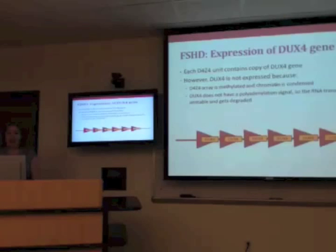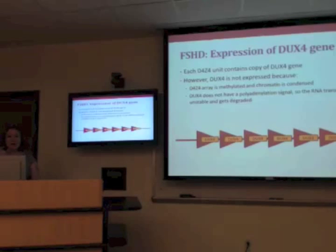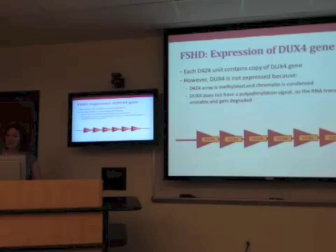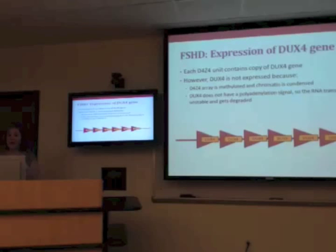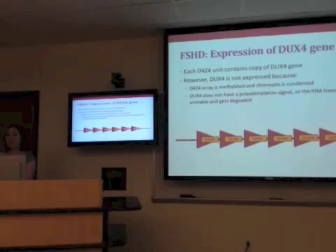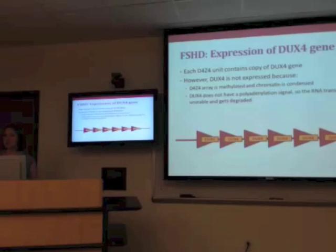FSH results from inappropriate expression of the DUX4 gene. DUX4 is actually located inside those D4Z4 repeat units — each little repeat triangle contains one copy of DUX4. But normally DUX4 isn't expressed because this repetitive region is highly methylated and the chromatin is condensed and tightly packed. Furthermore, DUX4 is missing something called a polyadenylation signal, so the RNA transcript is unstable and gets degraded — without that poly-A tail, it just unravels and doesn't get turned into anything. So those are two key things missing.